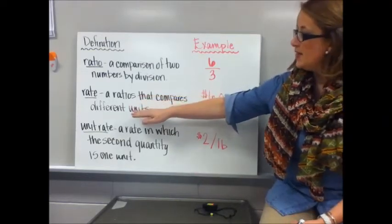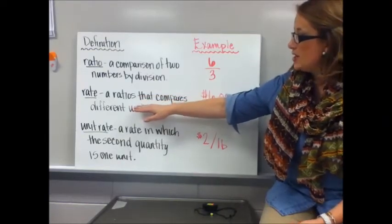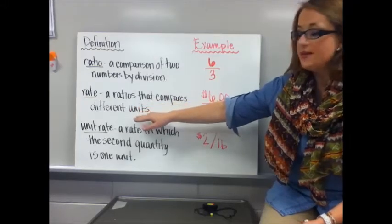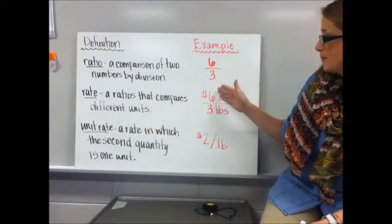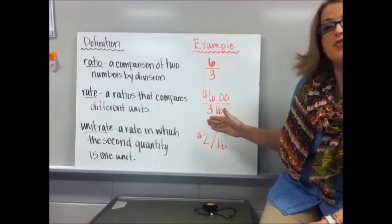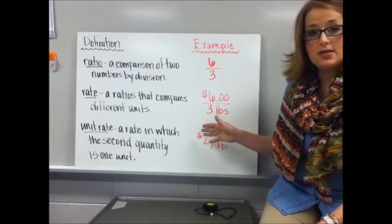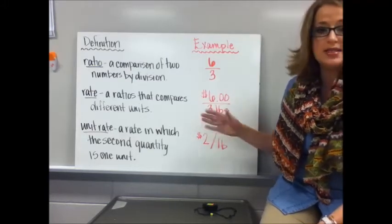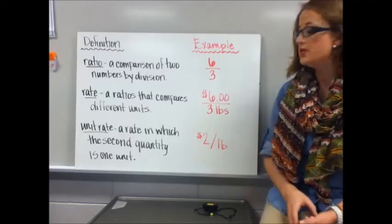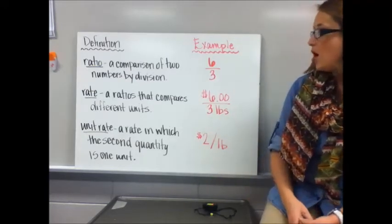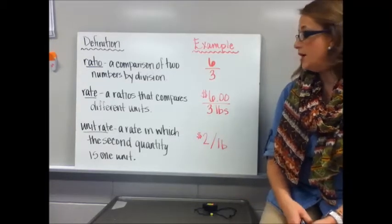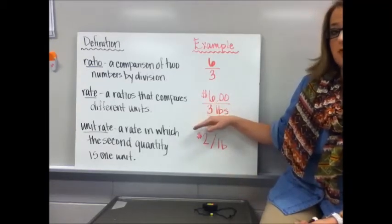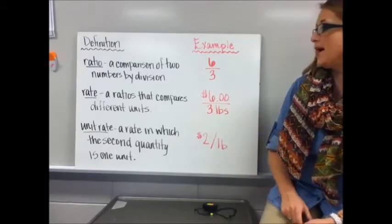Next is a rate. These are ratios that compare different units. So it's those same numbers, six and three, but we have units applied to it — in this case, dollars and pounds. This might be how much you spend on apples at the grocery store: you pay six dollars and you get three pounds worth of apples.